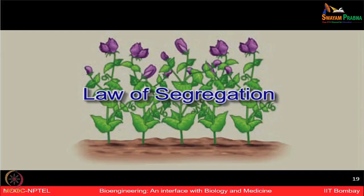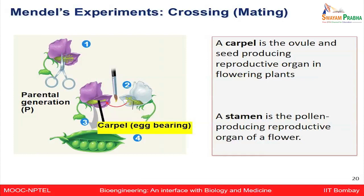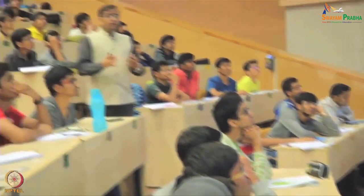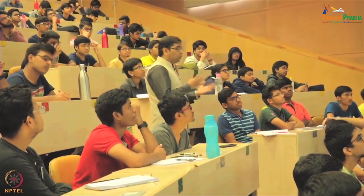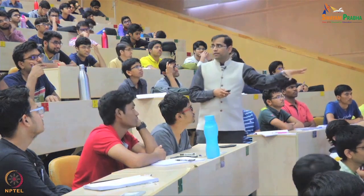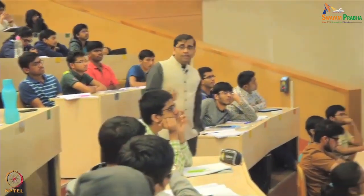That brings us to Mendel's first law: the law of segregation. The stamen is the male part of the flower — the pollen-producing organ. The carpel is the female part, the egg-bearing part of the flower. For his experiments, he ensured crosses were done under very controlled conditions so there was no cross-pollination from different flowers with different characteristics. He cross-pollinated only two contrasting, true breeding pea varieties.